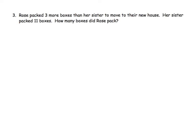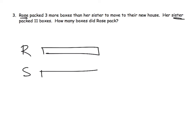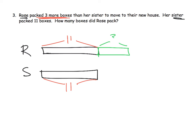We're going to go a little bit faster here. We've got Rose and her sister — we're going to begin by giving them both the same length of tape diagrams. She packed three more boxes than her sister to move to their new house. Her sister packed 11 boxes. How many boxes did Rose pack? So the sister right here represents 11, which means this piece is 11, and so this piece is also 11. But Rose packed three more boxes than her sister, so we're going to make her tape diagram a little bit longer by three. So how many boxes did Rose pack? That's 11 plus three, which is 14.